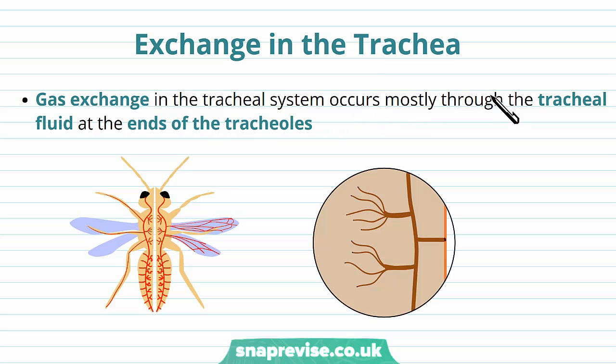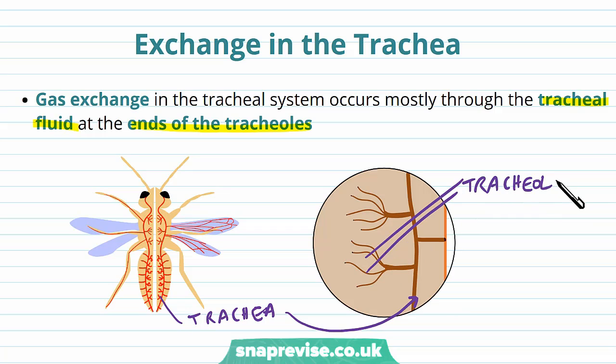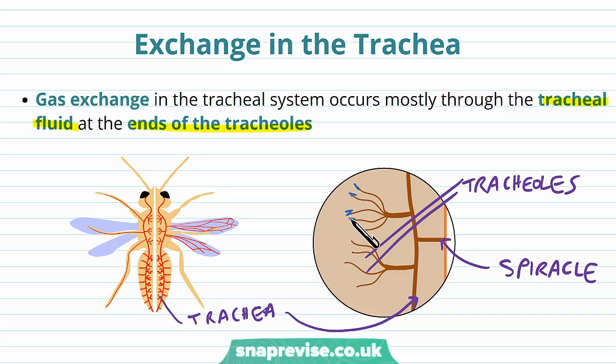Gas exchange occurs mostly in fluid at the end of the tracheoles called tracheal fluid, which exists just inside the ends of the tracheoles facing towards the body. The trachea are the main tubes, which divide into much smaller tracheoles. The spiracle is the opening to the outside world. The tracheal fluid at the end of the tracheoles is in contact with the cells of the insect's body, and this is where gas exchange occurs.